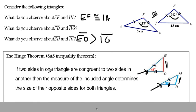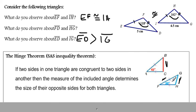So if two sides in one triangle are congruent to two sides in another, then the measure of the included angle — the angle in between the two sides — determines the size of their opposite sides for both triangles. Since we have our two congruent sides and an included angle, we can say that side BC compared to side GH: BC is going to be greater than side GH because angle A is greater than angle F.